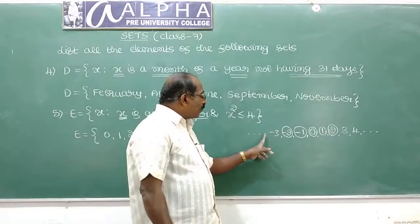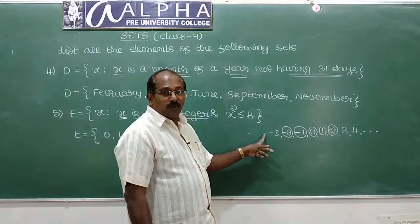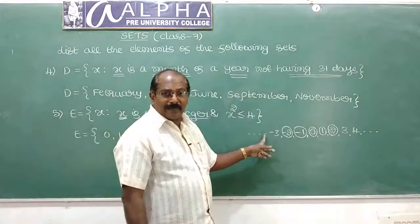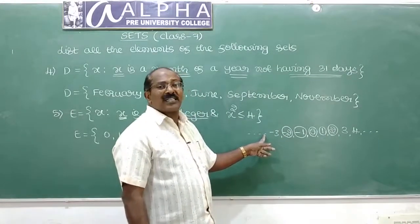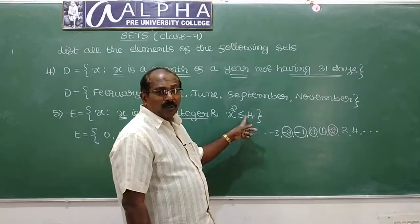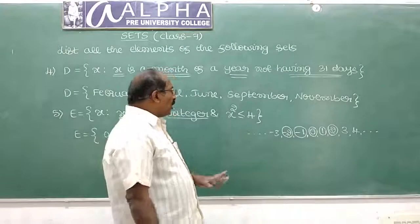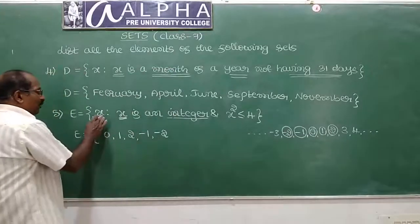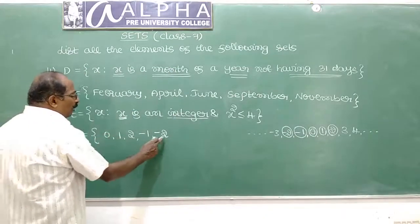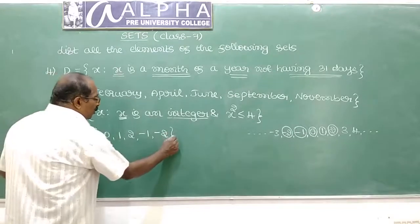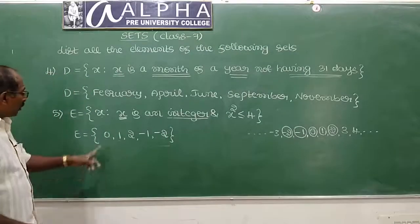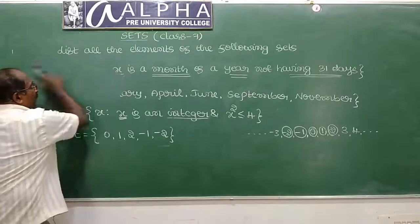Minus 4 squared is 16, which is not less than or equal to 4, so minus 4 is not an element. Therefore, the only elements of this set are 0, 1, 2, minus 1, minus 2. This is a finite, countable set.